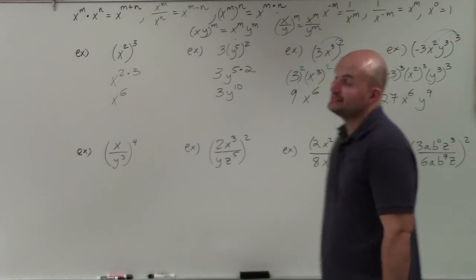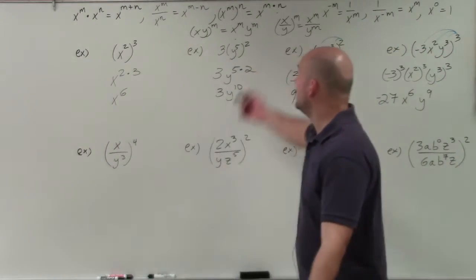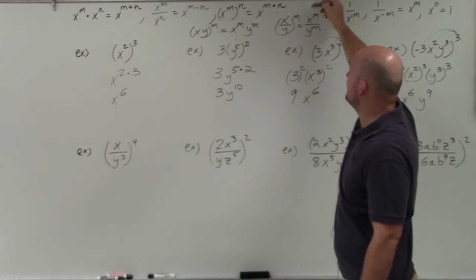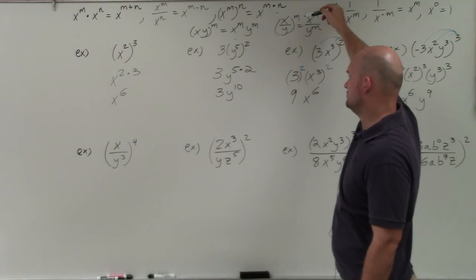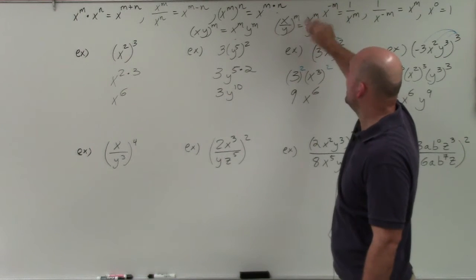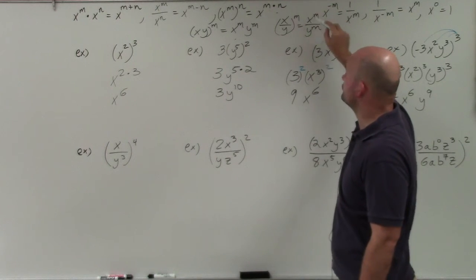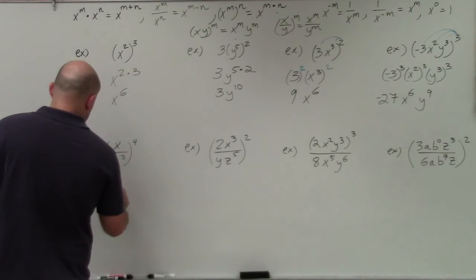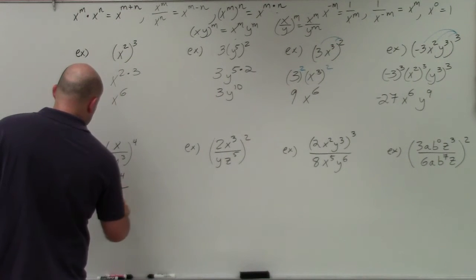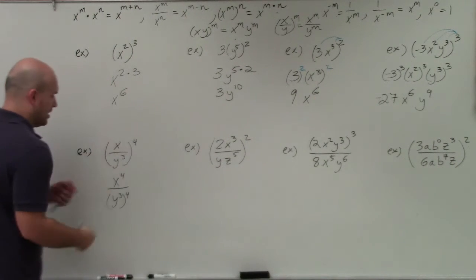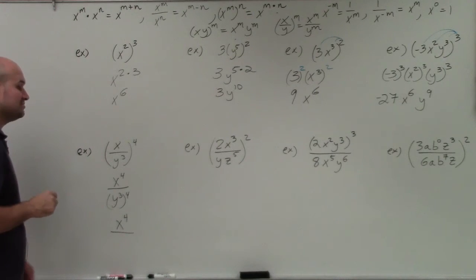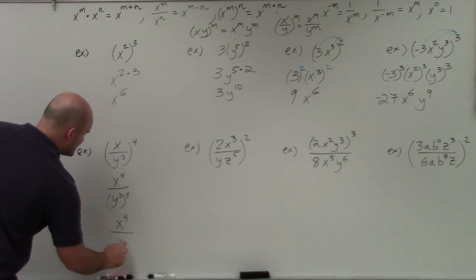Now we're going to look at applying the power-to-quotient rule. As I stated, if you have an expression raised to a power, that power distributes to both the terms in the numerator as well as the denominator. So over here, I have x to the fourth divided by y cubed, all to the fourth. I can't really do anything with x to the fourth, so that remains the same. And then y cubed to the fourth — 3 times 4 is y to the 12th.